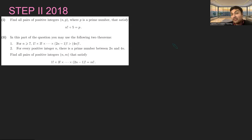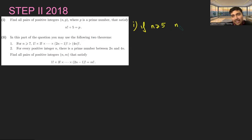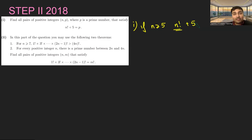Part one is a very standard number theory problem. When you see factorials, large factorials have lots of factors, and we're going to use that to our advantage. We notice that if n is at least 5, then n factorial will contain a multiple of 5 — there'll be a 5 in the product. And if you add 5, it's still a multiple of 5. So n! + 5 equals 5m, and it's clearly bigger than 5, so it can't be prime.